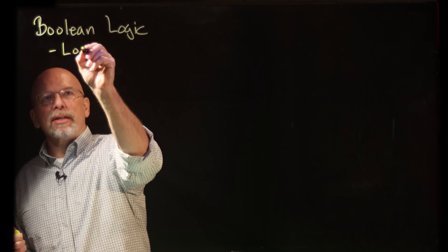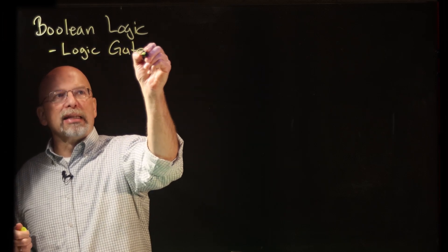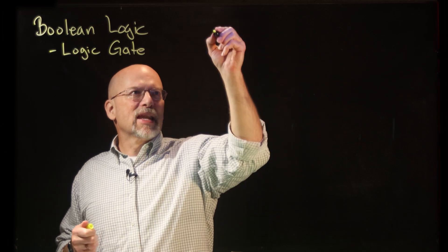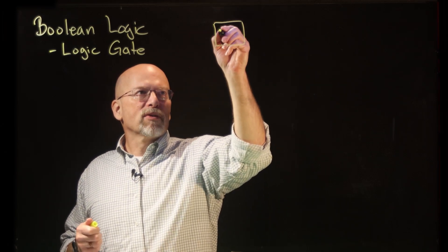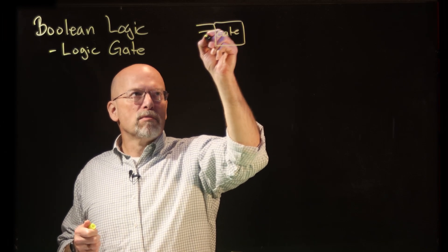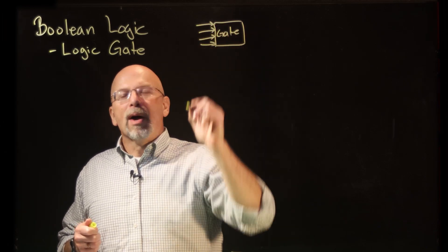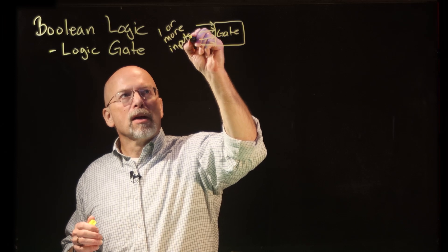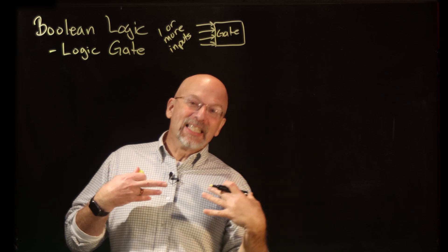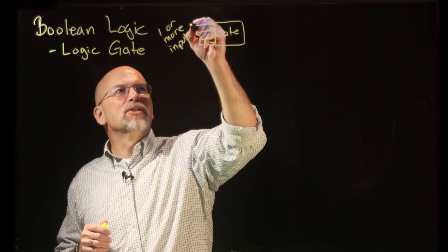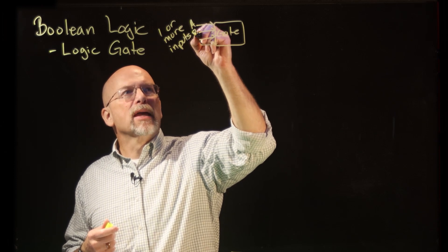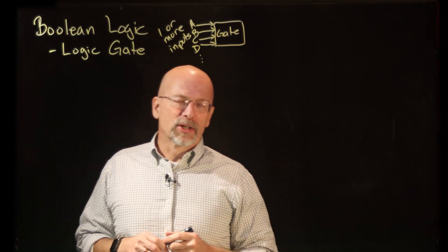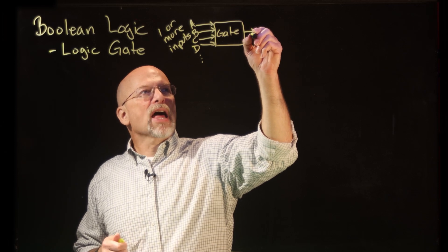The starting point for this is something called a logic gate. A logic gate is a small circuit that has one or more inputs. We're going to label these inputs with capital letters starting with A — so A, B, C, D, and so on — to label all the inputs going into that gate. And then we're going to have a single output X.